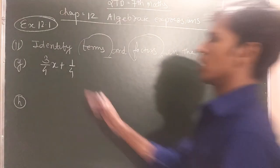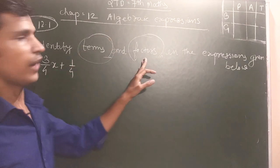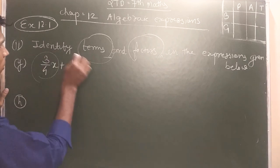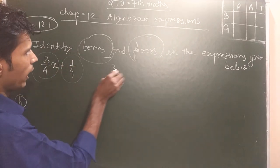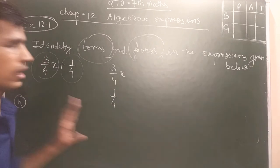Students, question number G of Exercise 12.1, question number 2: 3 upon 4X plus 1/4. Terms and factors ko define karna hai. Okay, this is first term and second term. Now I am writing here: 3 by 4X first term and 1 by 4 second term.